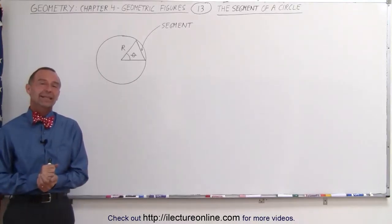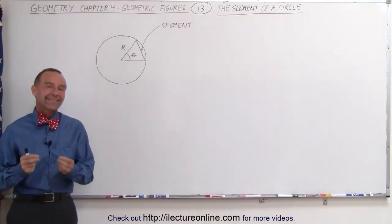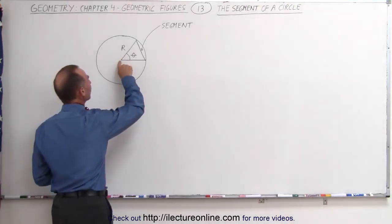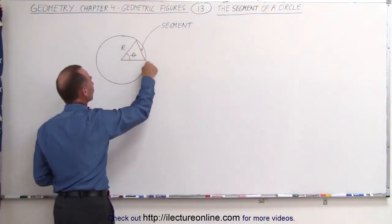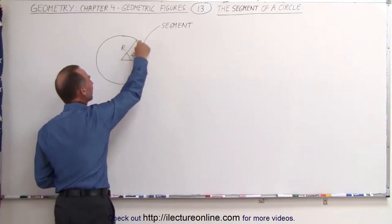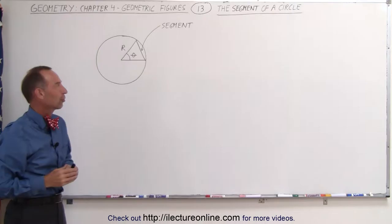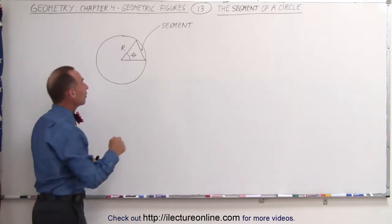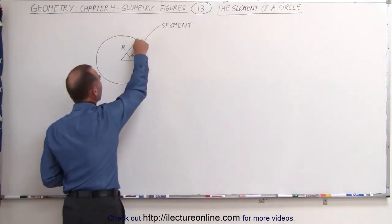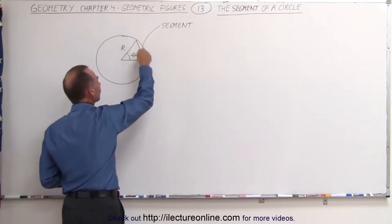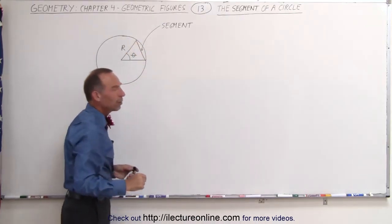Welcome to ElectronLine. In the previous video we looked at the sector of the circle — that's where we drew two lines from the center of the circle to the edge. We had an angle between them and that entire area was the sector of the circle. Now if we draw a chord from where the radius touches the circle on one side to where it touches on the other, we get a small piece on the outside called the segment of the circle.